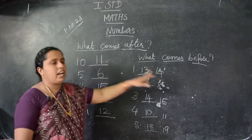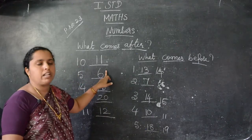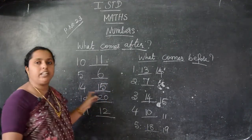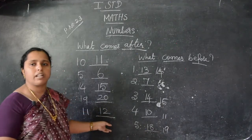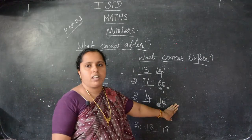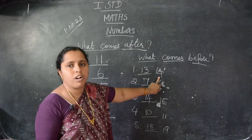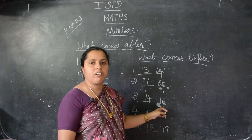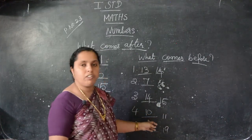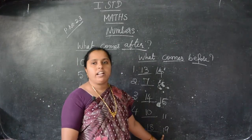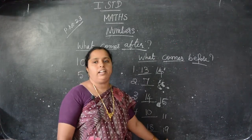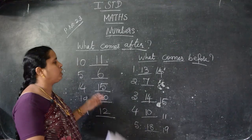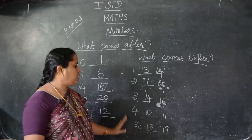Have you understood this one children? After 10 what number comes? 11. After 5? 6. After 14? 15. After 19? 20. After 11? 12. This is after number. Before 14? 13. Before 8? 7. Before 15? 14. Before 11? 10. Before 19? 18. In this class what we have seen: before number, after number, grouping 10, and which one is 10s and which one is 1s — all this we saw in this class.